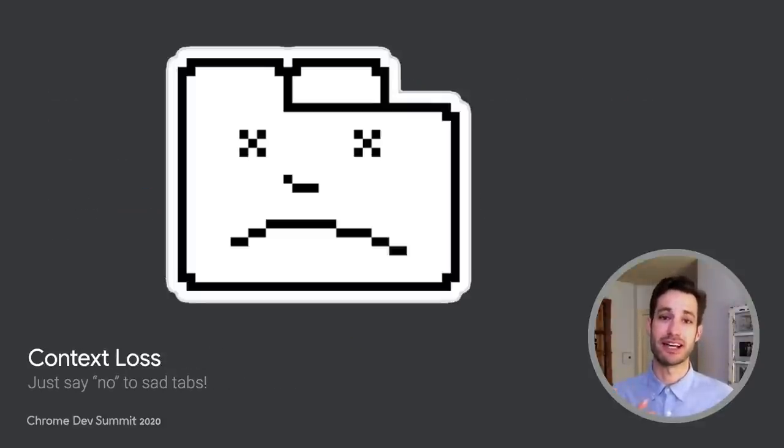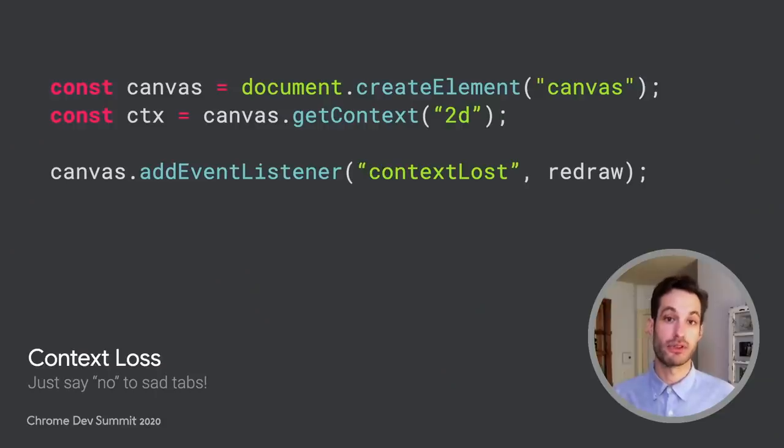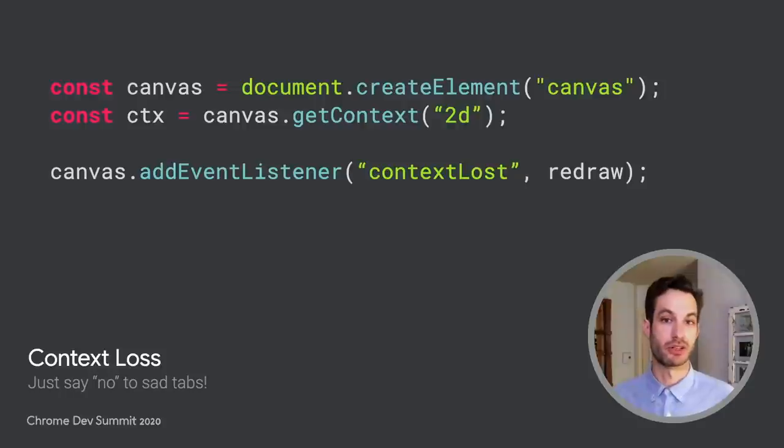We all hate a sad tab. Let's make sad tabs happy again. On lower spec devices with a million apps open, it's been possible to run out of GPU memory or run into some other kind of issue and get your context lost. Unfortunately, until now there's been no elegant way to deal with this once the user refocuses on your page. But with the new API, a canvas can notify the DOM when something has gone wrong and reinitialize the context automatically.